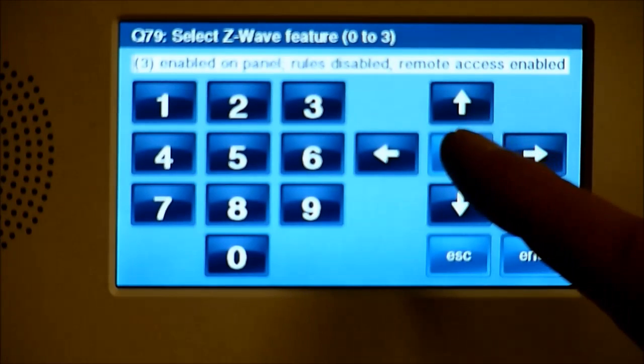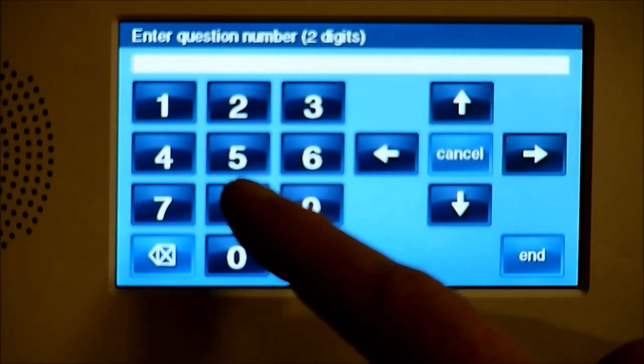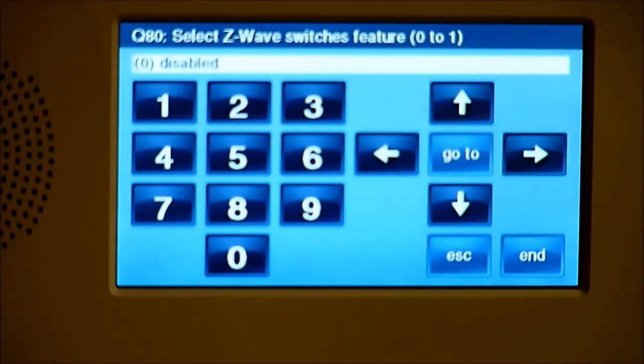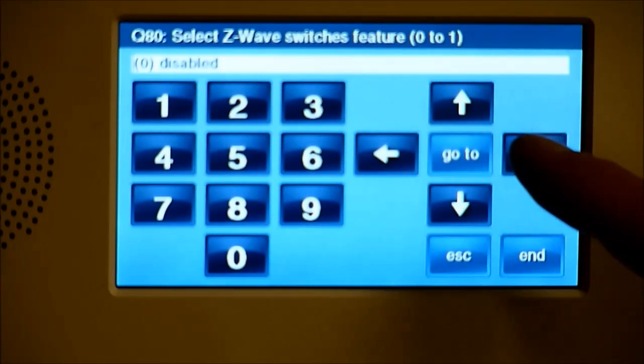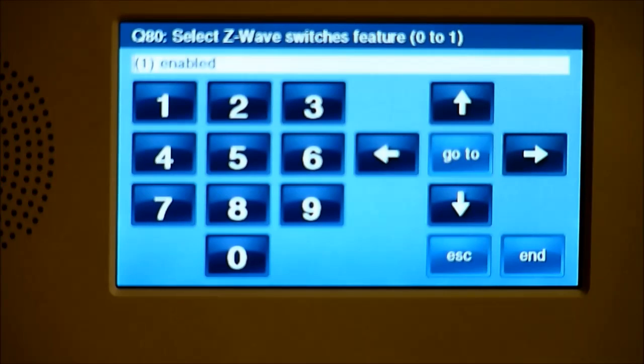So we'll hit Go to 80, 80. As you can see, Z-Wave switches. So these will be for light switches, lamp or appliance modules. It's currently disabled. So we just hit the right arrow and scroll over and turn it to Enabled to turn it on. And that's all you have to do.